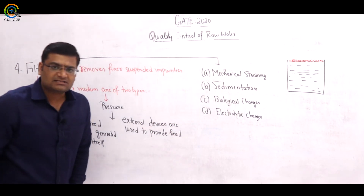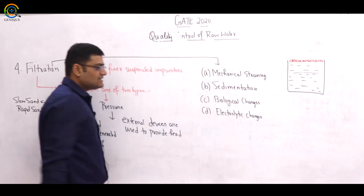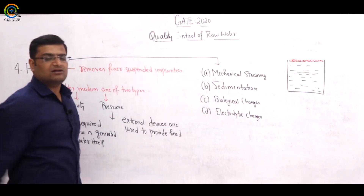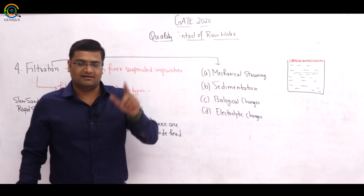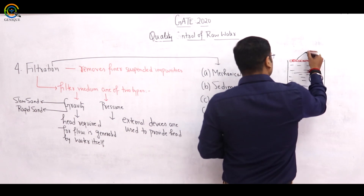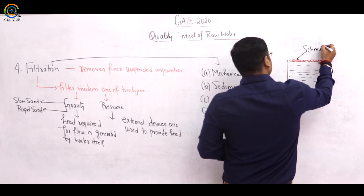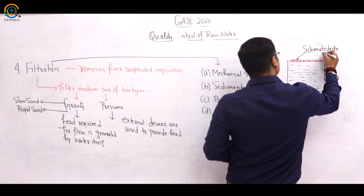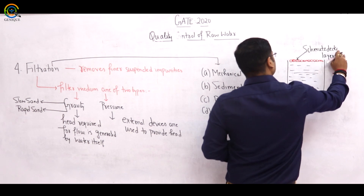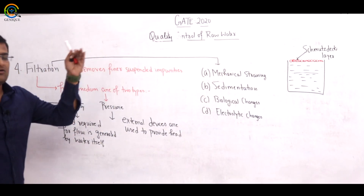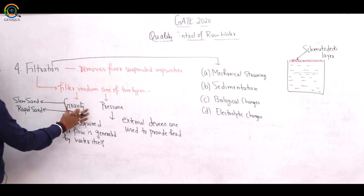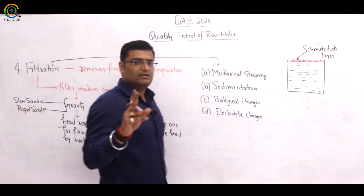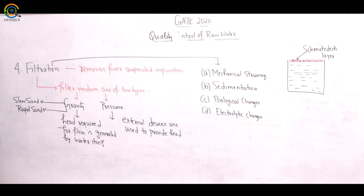So these four steps — mechanical straining, sedimentation, biological changes, and electrolytic changes — constitute the filtration process. The top layer where biological changes occur is called the schmutzdecke layer. Filter media are of two types: gravity filter (with slow sand and rapid sand sub-types) and pressure filter.